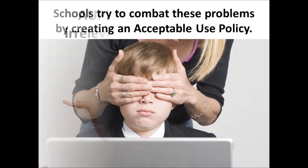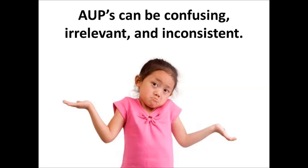Do you think this actually solves the problem? I'm afraid not. Many times, a school's acceptable use policy is written in terms that a child can't even understand. The same policy given to a senior in high school is often given to a first grader. Just having a student sign a paper doesn't mean they understand what it says. Another problem is that these policies are often not even relevant to what students are actually doing on the internet. A good acceptable use policy should be updated yearly to stay abreast of new trends in technology, but sadly many of these policies are irrelevant and out of date. We know that these digital issues cannot be solved on a district level — they must be solved on a personal level.